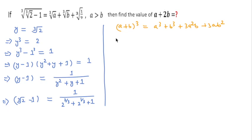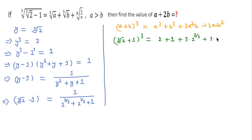Using this formula, we expand (cube root of 2 plus 1)³. The cube of cube root of 2 is 2, and the cube of 1 is 1, plus 3a²b which gives 3 times 2 to the power 2/3, plus 3ab² which gives 3 times 2 to the power 1/3. So 2 plus 1 is 3, giving us 3 plus 3 times 2^(2/3) plus 3 times 2^(1/3).